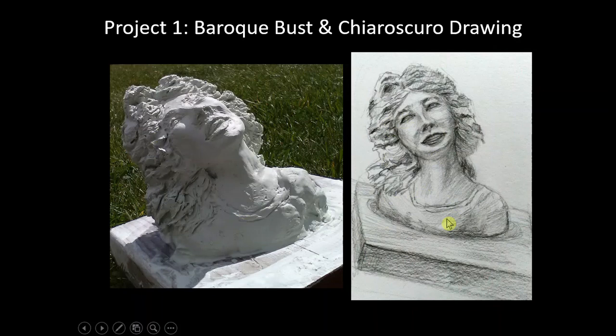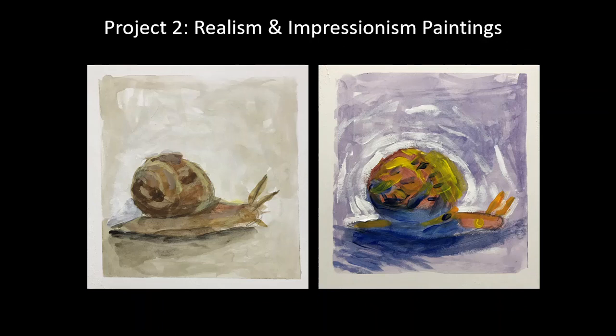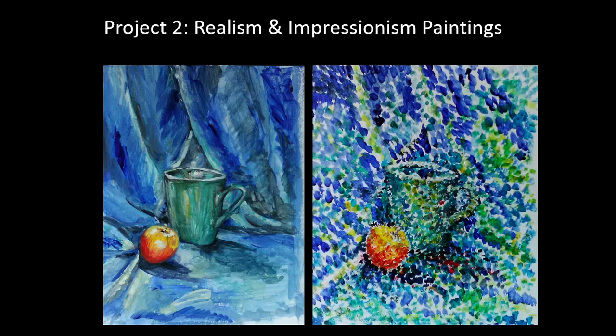Project two is a realism and impressionism painting series. You're going to do two paintings — one in the tradition of realism, using natural tones, and then the other in the tradition of impressionism. Think of pointillism and Monet and Van Gogh. Here's another example, and remember, this is student work — it looks really good.